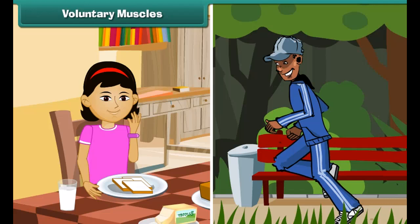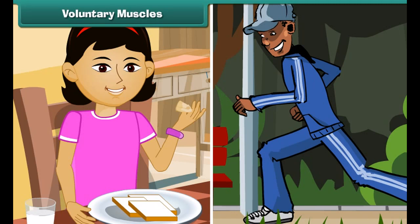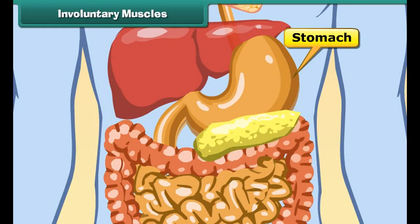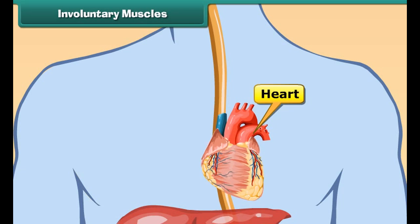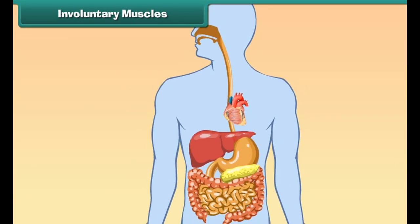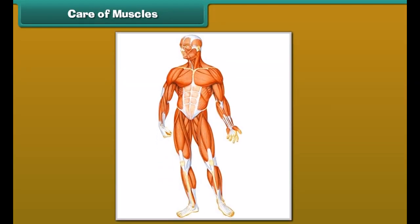According to the nature of their functions, muscles are of two types: voluntary muscles and involuntary muscles. Some actions are performed whenever we wish, like eating, walking, etc. We can start or stop these actions whenever we want. Muscles that carry out these actions according to our wishes or volition are called voluntary muscles. Movements brought about by voluntary muscles are called voluntary movements. Our arms and legs contain voluntary muscles.